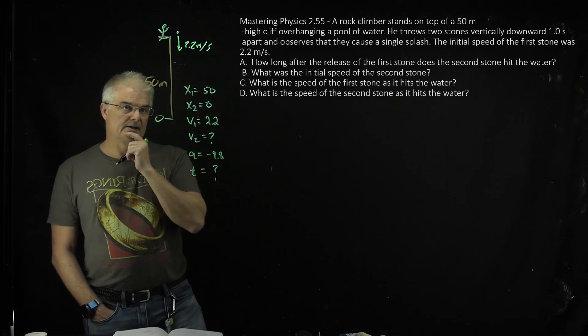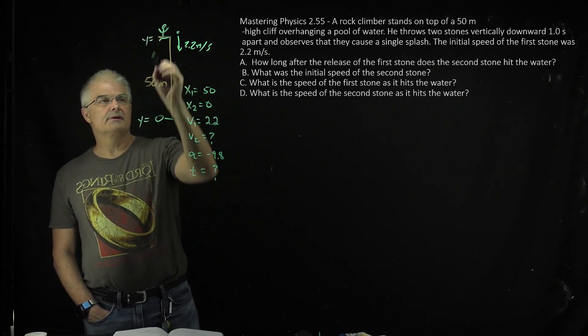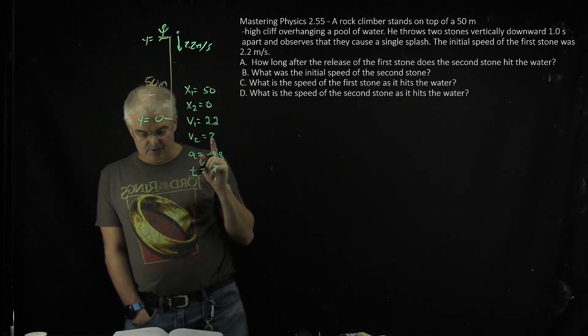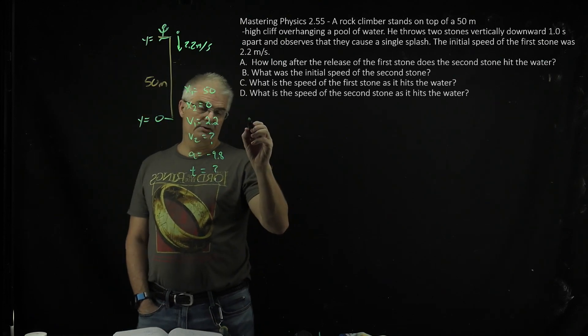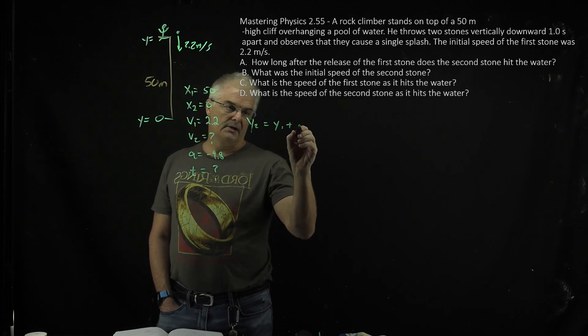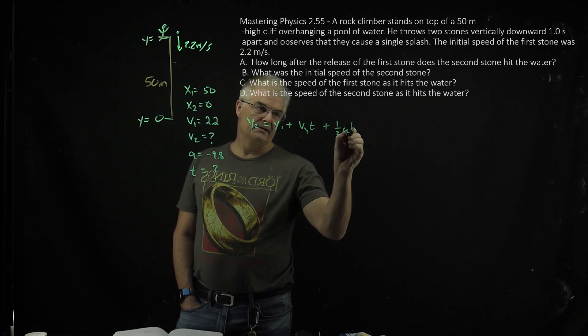And actually, we should call these y's, because it's really y equals 0, and y equals 50. That doesn't matter, though. So what I'm going to do is I am going to use the first equation, which is, I'll use y's now, y2 equals y1 plus vyt plus 1 half at squared.